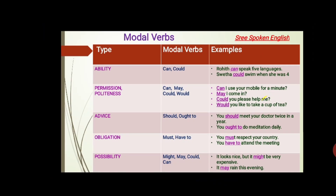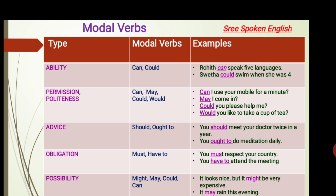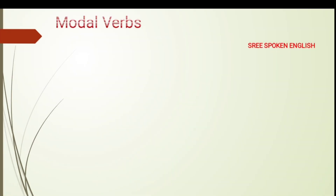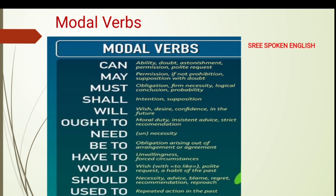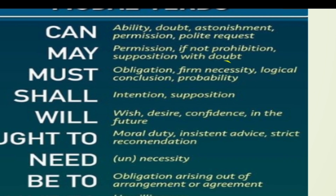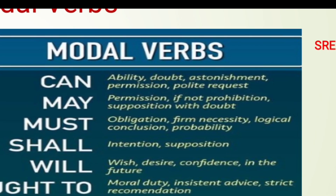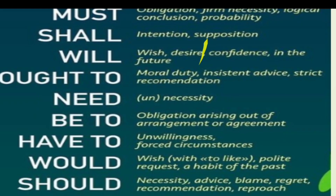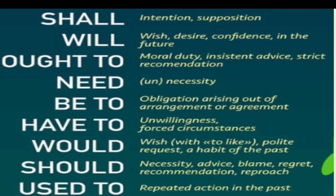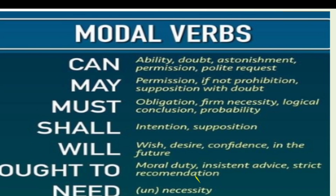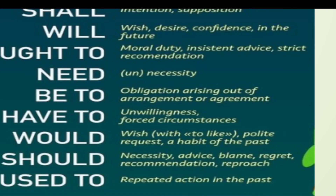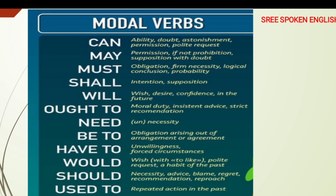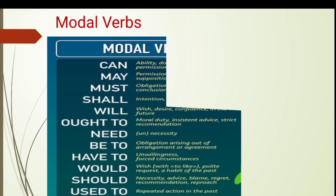By this table you can understand the modal verbs and all their types — ability, permission, advice, obligation, and possibility. The same can be understood with another picture. These modal verbs — can, may, must, shall, will, ought to, need, have to, would, should, used to — can express different types of functions. Have a look at this chart and you can understand everything.